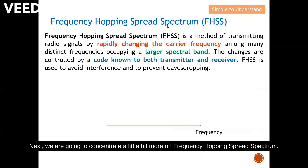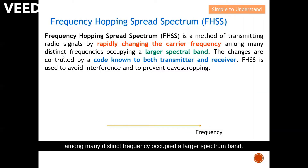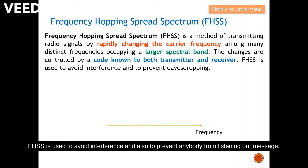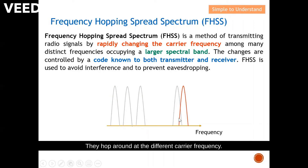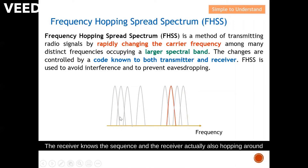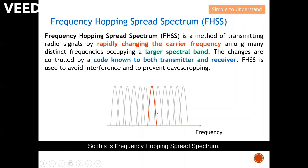Next we are going to concentrate on frequency hopping spread spectrum. This is a method of transmitting radio signals by rapidly changing the carrier frequency among many distinct frequencies, occupying a larger spectrum band. The changes are controlled by a code known to both the transmitter and receiver. FHSS is used to avoid interference and also to prevent anybody from listening to the message. As shown in this animation, the transmitter hops around different carrier frequencies and the receiver, knowing the sequence, also hops around to retrieve the original message.